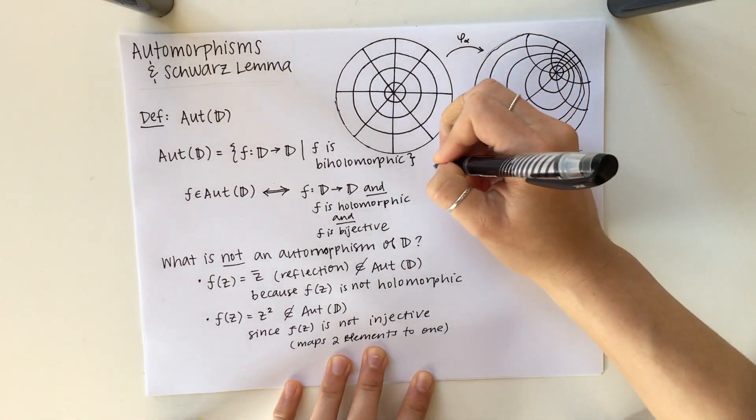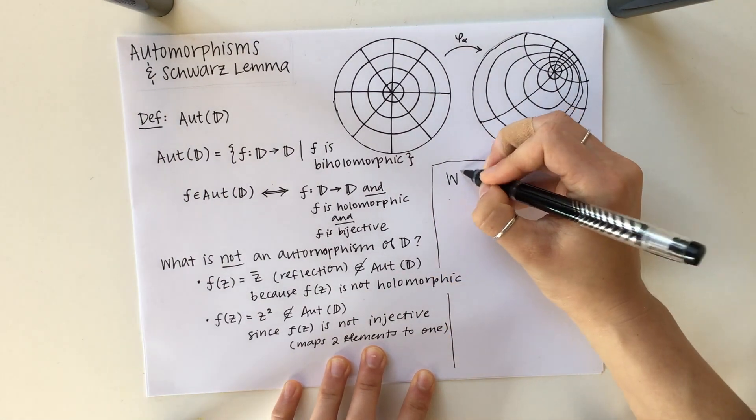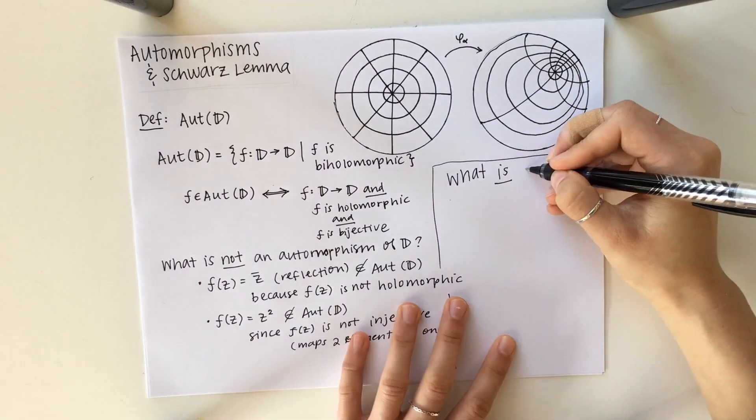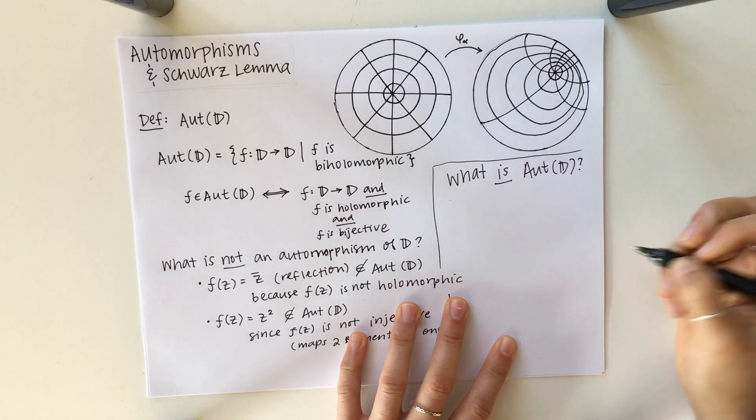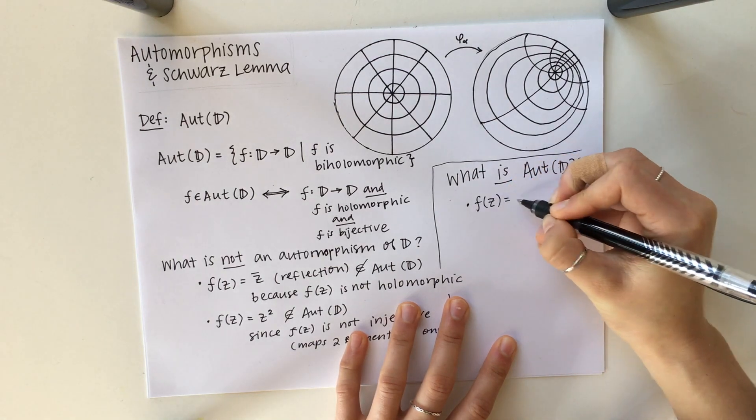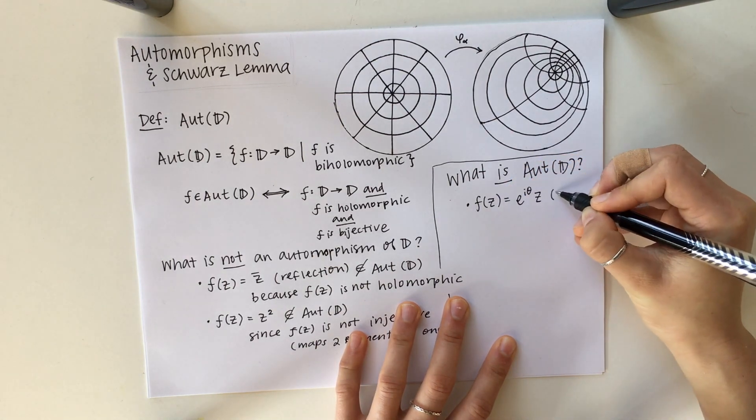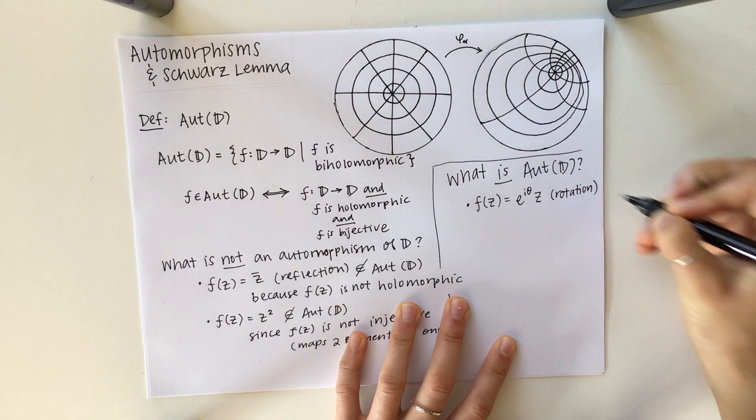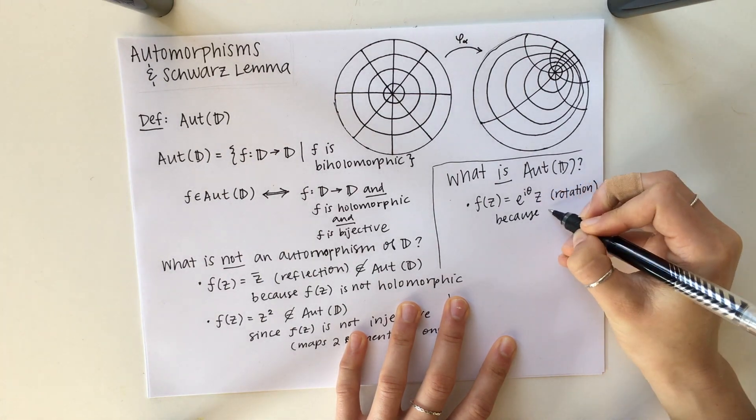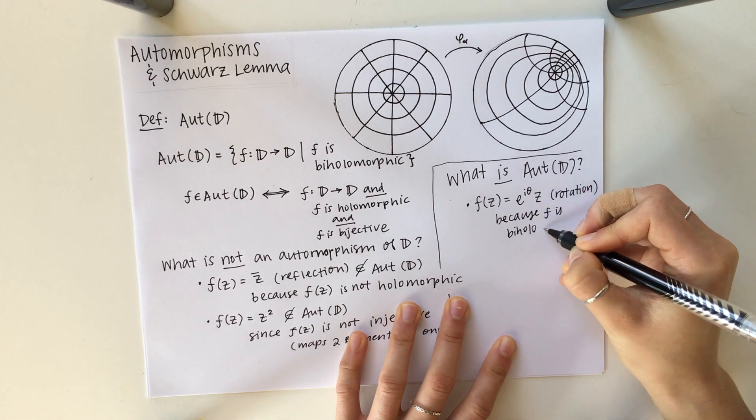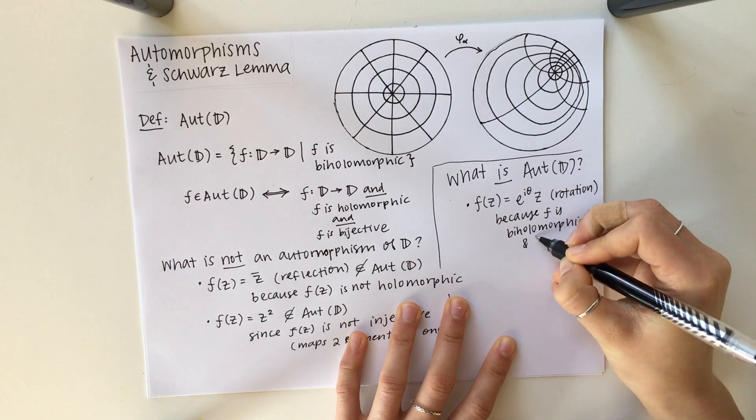Then let's talk about what an automorphism is, and this really comes down to two categories. The first one is a rotation. This is very easy to visualize and easy to understand. Since it clearly maps D to D, it is injective and it is holomorphic.